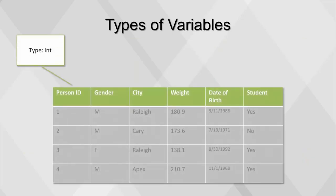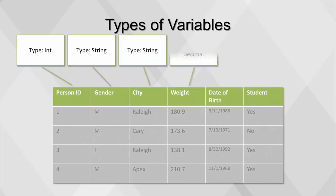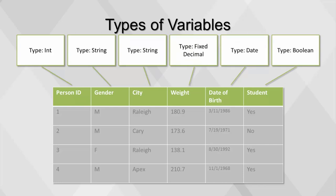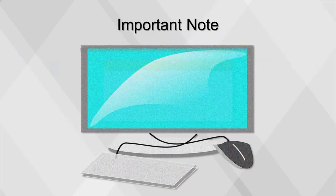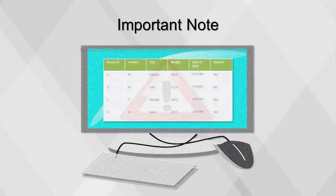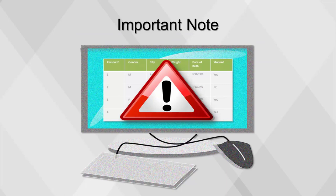Here are the variable types for our example table. PersonID is a discrete numeric variable. Gender and city are string variables. Weight is a fixed decimal variable. Date of birth is a date, and student is Boolean. Software packages can automatically assign fields with data types, and sometimes these can be assigned incorrectly—examination of these data types is necessary to ensure proper utilization further downstream.